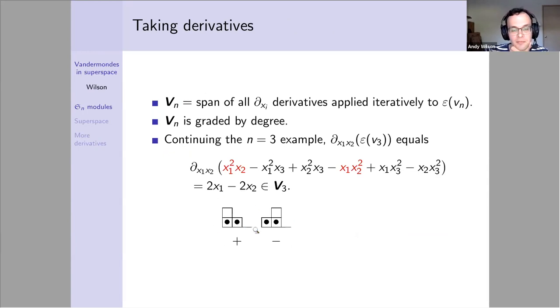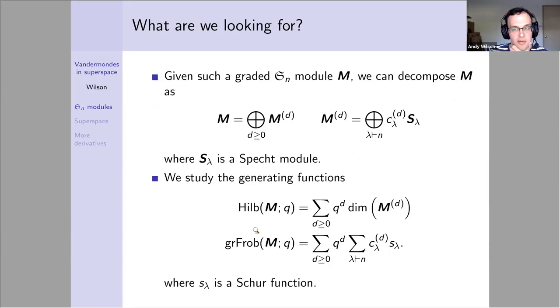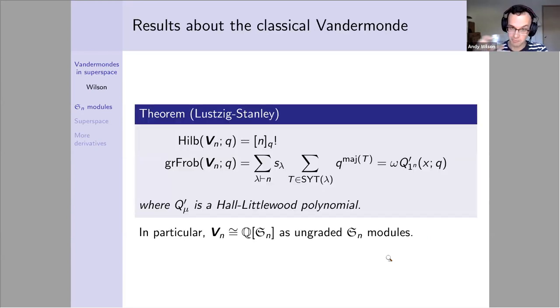So what are we looking for when we do this process? Given such a graded S_n module M, we can decompose it into pieces and further into the irreducible or Specht modules, looking at how many times each Specht module appears. We study certain generating functions: the Hilbert series, which tracks the dimension of each graded piece, and the graded Frobenius series, a graded symmetric function that tracks how often each Specht module appears by replacing each with a Schur function.